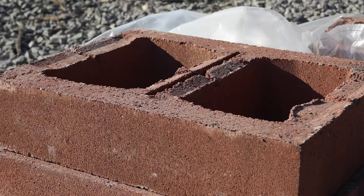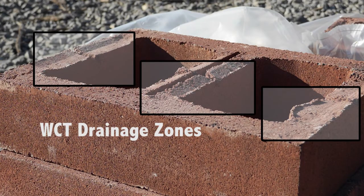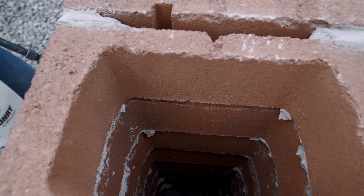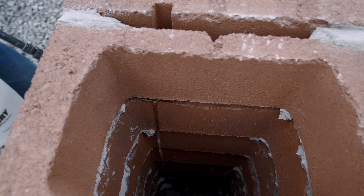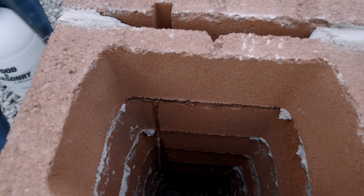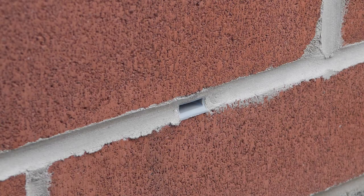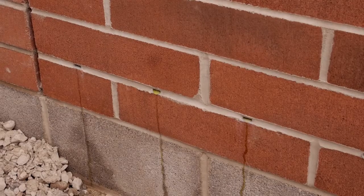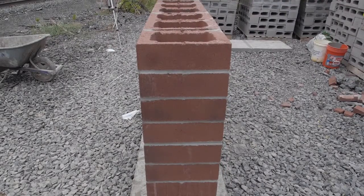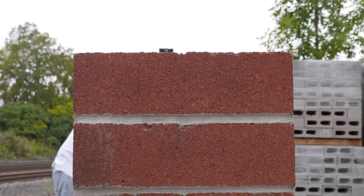If any moisture at all is able to get past these barriers to reach the interior of the wall, the WCT blocks have a patented design that features sloping top surfaces to the webs. These sloped features direct water to drop down into the cores of the wall and exit via the wall flashing system, as opposed to traversing to the interior side of the wall. The WCT drainage features are invisible when placed in the wall, so you can use them to build ends or corners of the wall also.